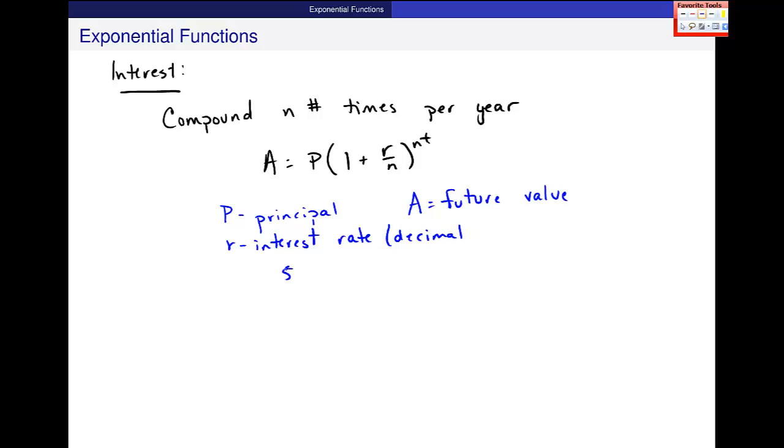So for example, if your interest rate is 5%, in this formula we use .05. N is the number of compounding periods per year, and t is the number of years.